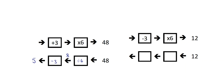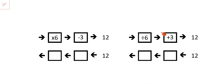Let's keep this going. So this one: minus three, times six. Going backwards we're going to do 12, then divide by six, and then add three. So 12 divided by six is two, two plus three is five. Another one — the next one — just check the inverse.